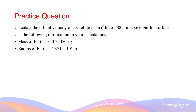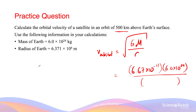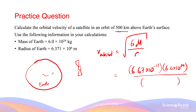Let's calculate the orbital velocity of a satellite in an orbit 500 km above Earth's surface. The orbital velocity, as proven before, equals the square root of GM over r. Drawing a diagram helps visualise the scenario: the radius of the Earth is 6.371 × 10⁶ metres, while the altitude is 500 km. The distance r in the formula is the distance between the satellite and the centre of the Earth, not just the altitude.